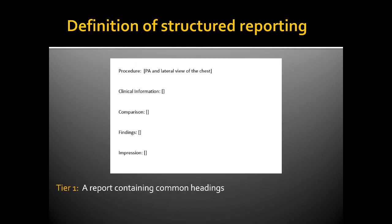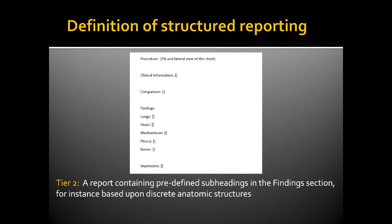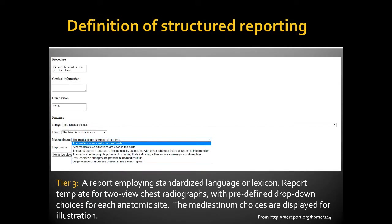Here's an example of a Tier 1 report that contains common headings. Here's an example of a Tier 2 report containing predefined subheadings in the findings section, where specific anatomic structures are listed out separately. This is an example of a Tier 3 report employing standardized language or lexicon. The image shows a report template for a two-view chest radiograph with predefined drop-down choices for each anatomic site, with the mediastinum choices displayed for illustration.